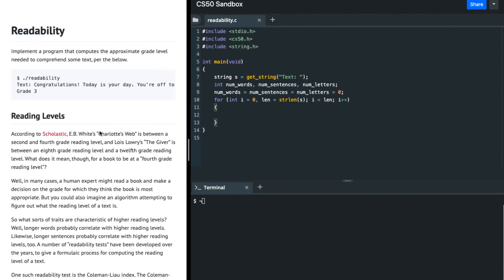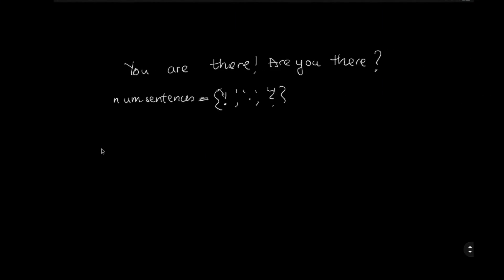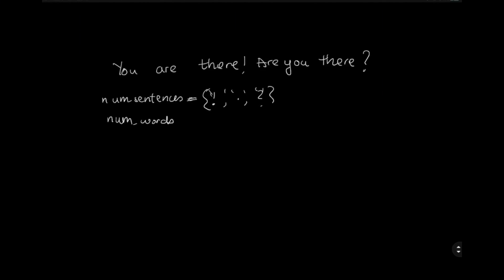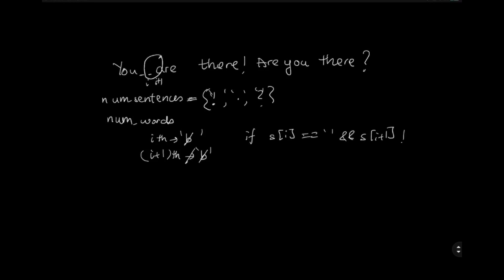To figure out the number of words, we need to look at every single character and check if the i-th character and the i+1-th character have a special property: if the i-th character is a blank space and the i+1-th character is not a blank space, then we can consider that we found a word and increment the number of words by one.